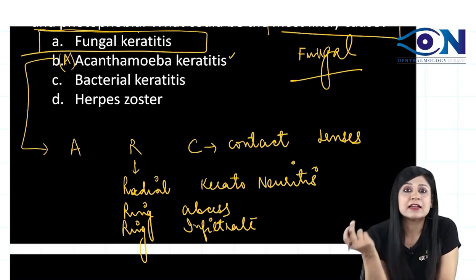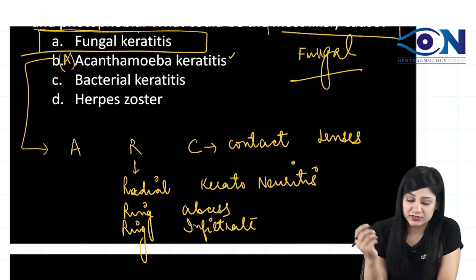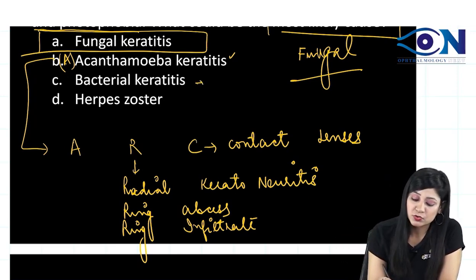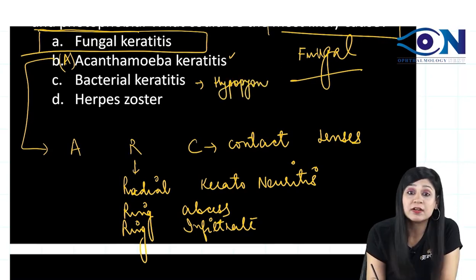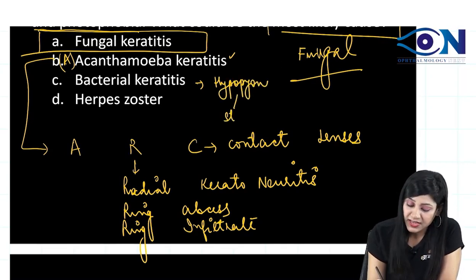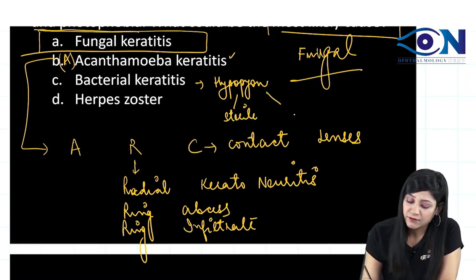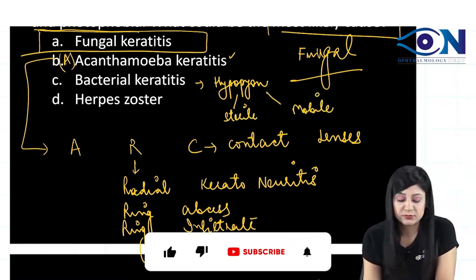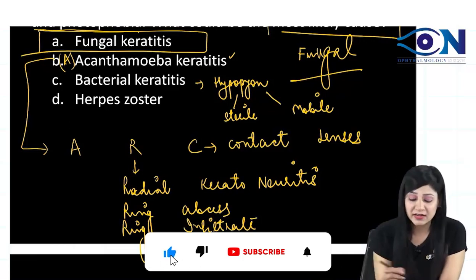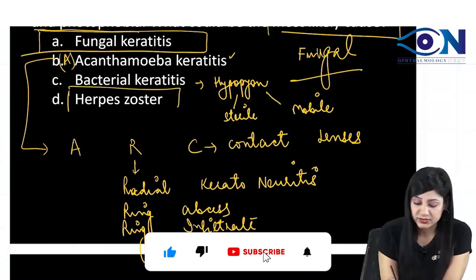In bacterial keratitis, you are going to get hypopion, which is always sterile as well as always mobile.